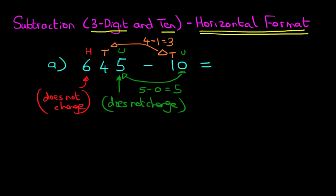So therefore, 645 minus 10 equals 600. The 6, remember, the 6 does not change. As for the tens, well, the tens have gone from 4 to 3. We've subtracted 1. And don't forget, the units do not change. So that remains 5. So 645 minus 10 equals 635.